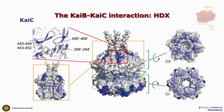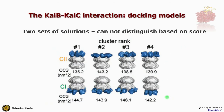Since there are two possible binding sites, we performed two docking experiments — docking one KaiB onto KaiC targeting the top region (C2) and the bottom region (C1). This gave two sets of solutions. Based on the Haddock score alone, we could not distinguish whether C2 or C1 solutions were better. The different clusters obtained left us unable to differentiate the two binding sites using our scoring function.